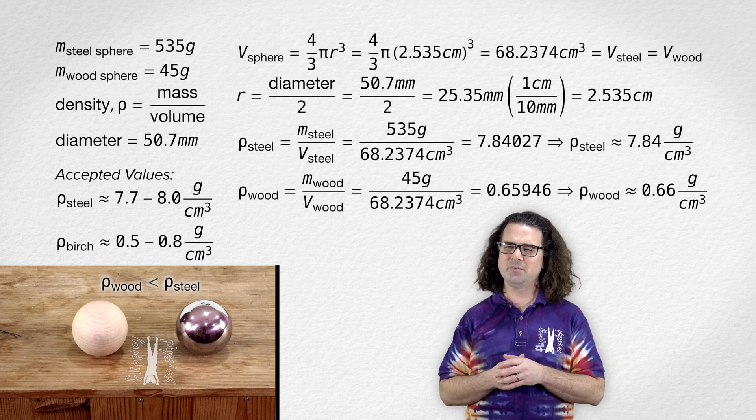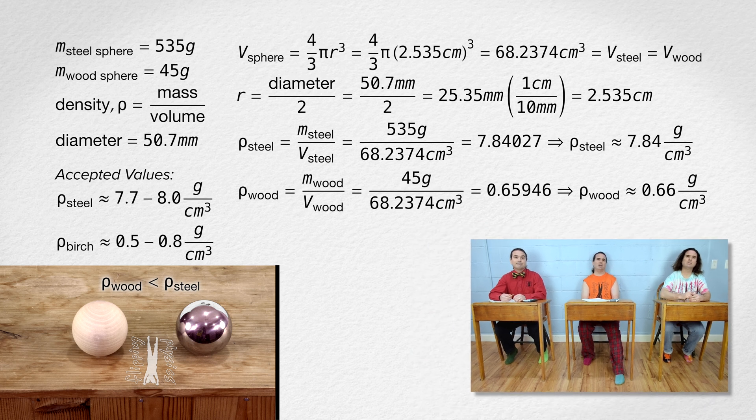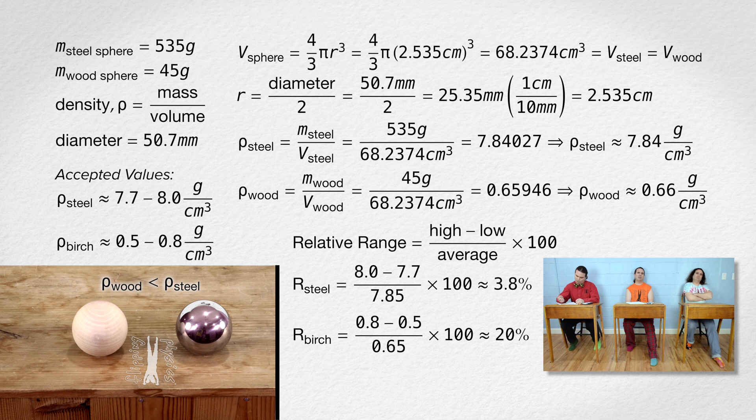Uh, Mr. P? Yes, Bobby? Why is the accepted value for the density of birch wood a wider relative range than the relative range for the accepted value for the density of steel? Oh, I bet that is because steel is a lot more consistent of a material, whereas birch wood has a lot more variance in it. I mean, birch wood is grown in nature as trees and steel is made by humans.